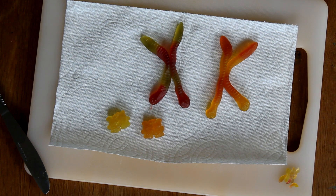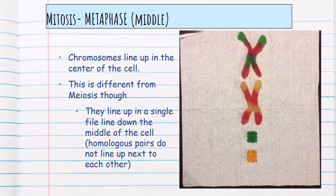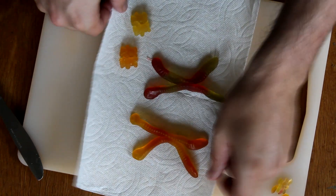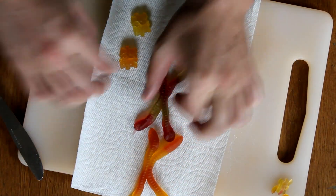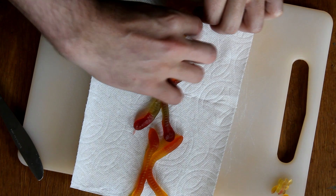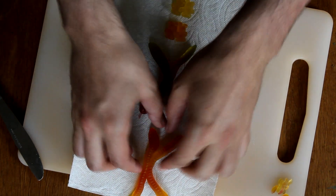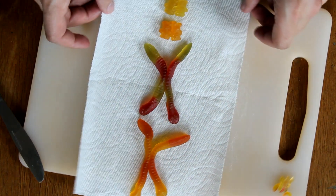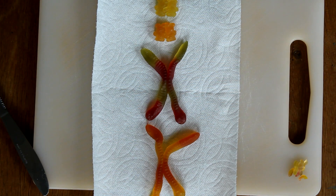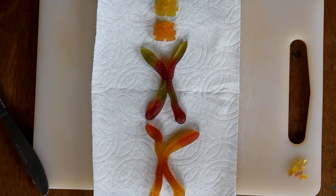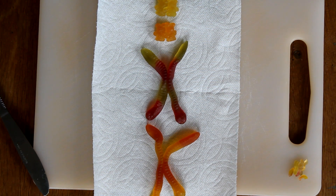Next is metaphase — think 'middle.' In metaphase, all the chromosomes line up along the middle. Middle — metaphase — they both start with M. So now they're all lined up in the middle.